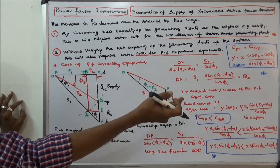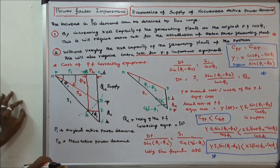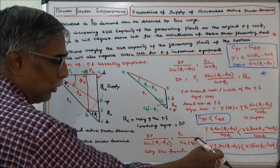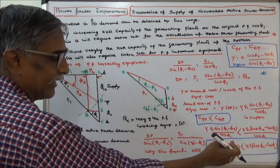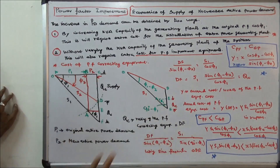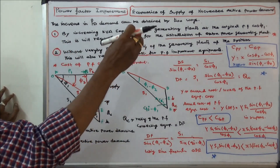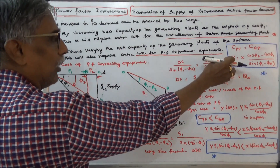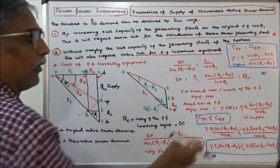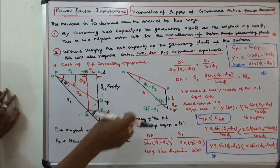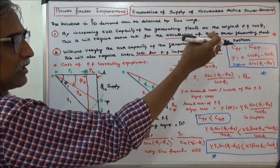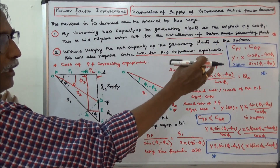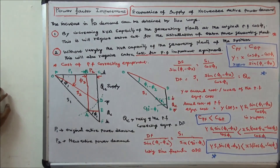We simplify to: Y into S1 into sine(phi 1 minus phi 2) is less than X into S into (cos phi 2 minus cos phi 1). When both become equal — that is, when the cost of the power factor equipment equals the cost of the generating plant — Y, the annual cost per kVAR of the power factor equipment, is equal to X into (cos phi 2 minus cos phi 1) divided by sine(phi 1 minus phi 2), in rupees. This is the second case. Thanks for listening.